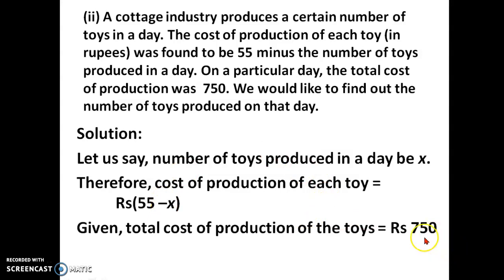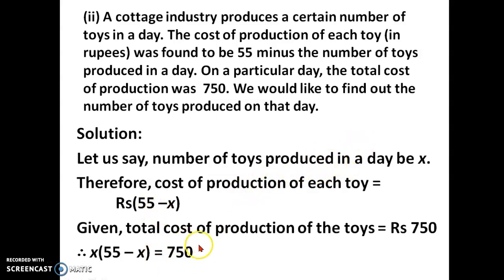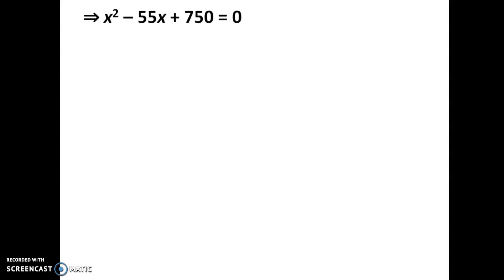The total cost of production is 750 rupees. If x toys are produced and each costs 55 minus x rupees, then multiplying gives total cost: x into (55 minus x) equal to 750. Removing brackets and simplifying, we get x squared minus 55x plus 750 equal to 0.